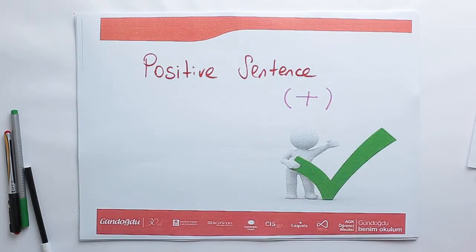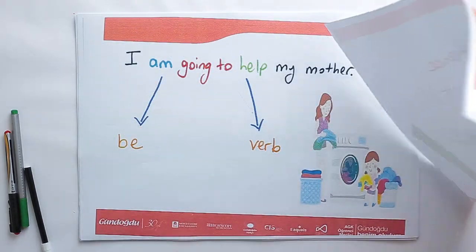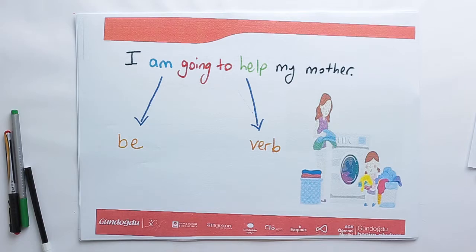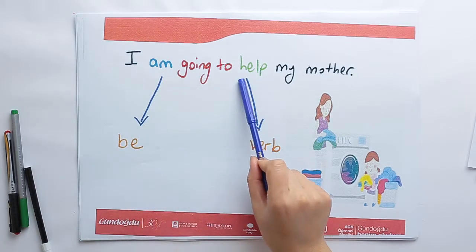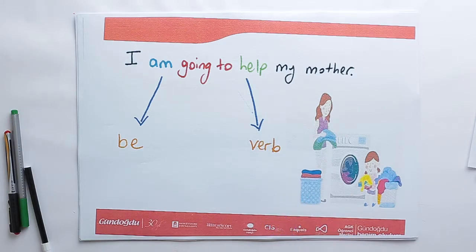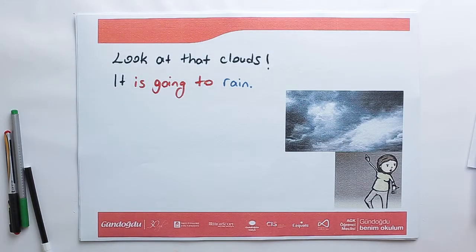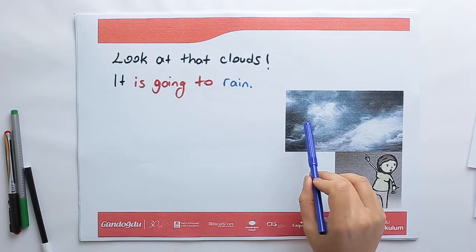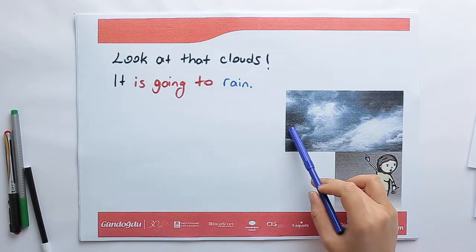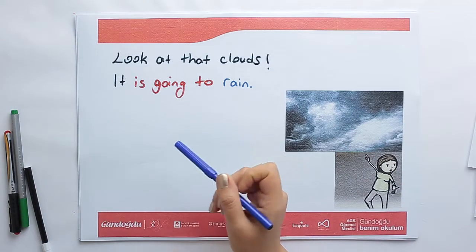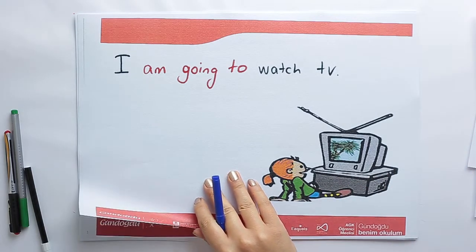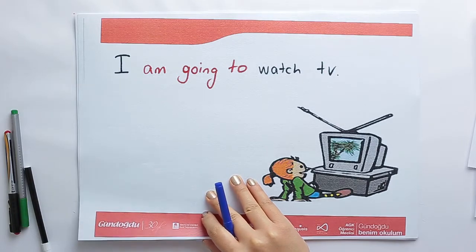Positive sentence. I am going to help my mother. This is 'be' and here is the main verb. Look at the clouds — it's going to rain. Here we have grey and black clouds and it's going to rain. I am going to watch TV when I finish my homework.